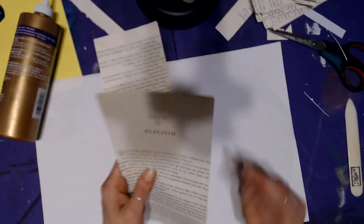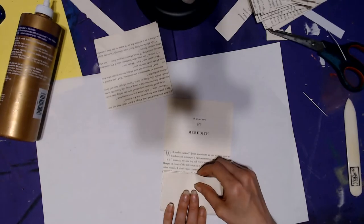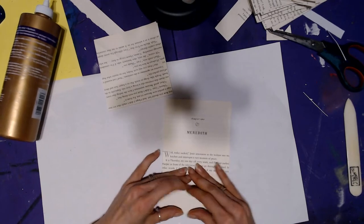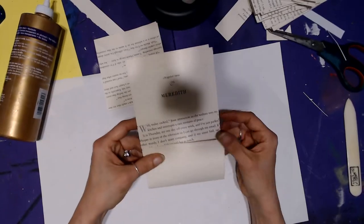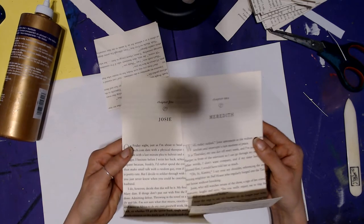What this does is it produces the pocket and it produces the top. Now, what you're going to do is take one of these and put glue on the flap that you just folded.